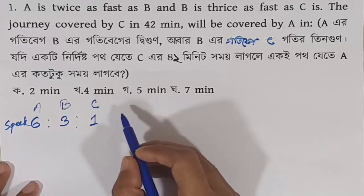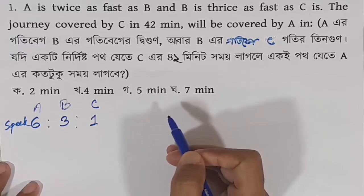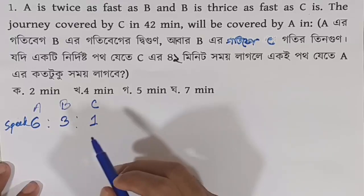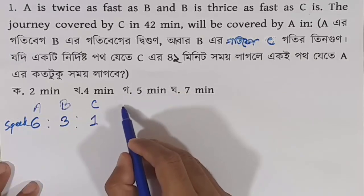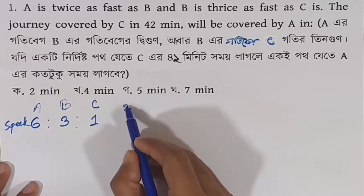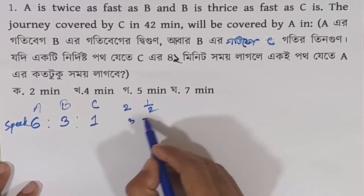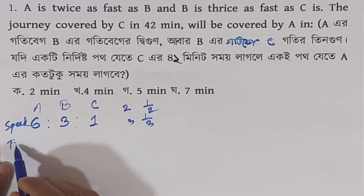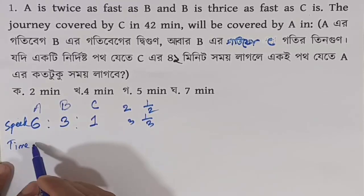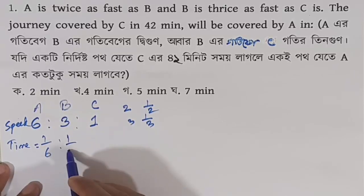Since time is inversely proportional to speed, we take the inverse of the speed ratio. Speed ratio is 1, 2, 2 — inversed gives time ratio. With the combined speed ratio being 1 to 2 to 6, the inverse gives the time ratio as 6 inverse, meaning 1 by 2 and 1 by 3.